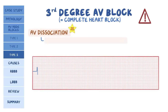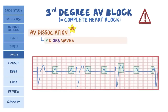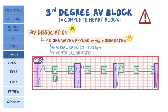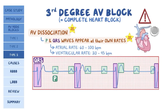On the ECG, the P waves and QRS complexes have nothing to do with each other, each appearing at their own rates. The atrial rate is 60 to 100 beats per minute, whereas the ventricular rate usually ranges between 30 and 45 beats per minute. Because of how dangerous third-degree blocks are, anyone diagnosed with it needs a pacemaker.